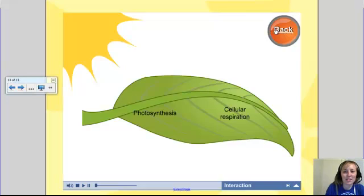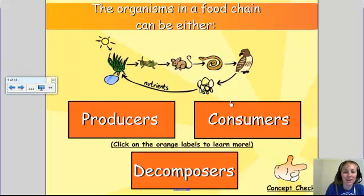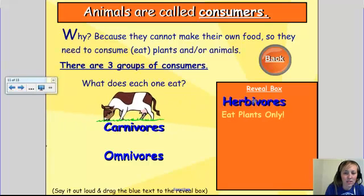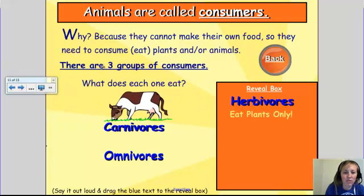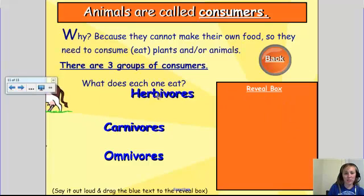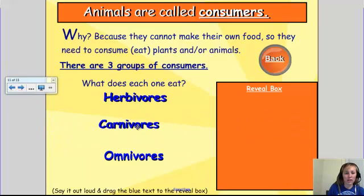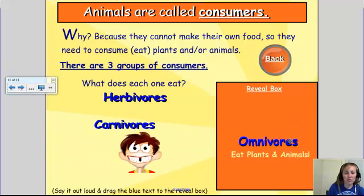Back here, I'm going to press the back button, and then I could go learn about consumers, where I can move this and have a visual of a type of herbivore that eats plants only. I can move that back, and I can see what carnivores are and what they eat, and the same with omnivores.